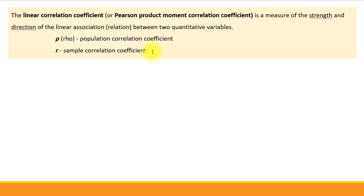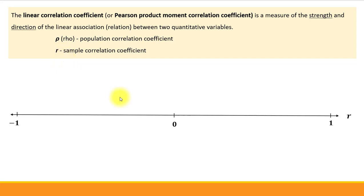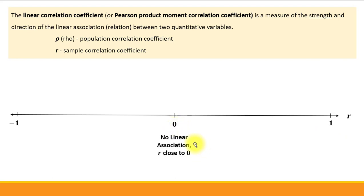In the sample case we denote the correlation coefficient by lowercase r. Let's review the properties. The correlation coefficient is a number that can range from negative one to one. When it equals zero or is close to zero, no linear association exists between the two variables, and points on the scatter plot will not show any distinct pattern.